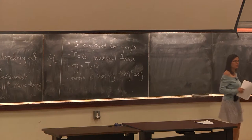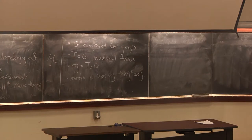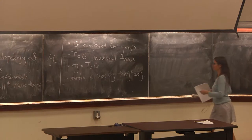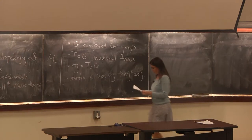Lie(G) is going to be the Lie algebra of G. I want to fix a metric on G, and I'm going to use this to identify G* with G pretty freely. So if you ever find yourself saying, wait, that's not in G, that's in G*, I've identified them.